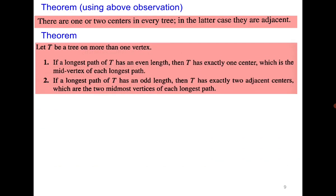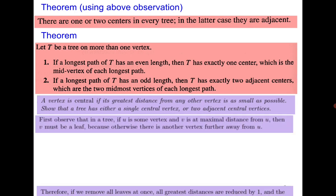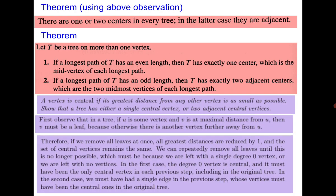Therefore we have the following observation: every tree has one or two centers. If the longest path of the tree has even length, then T has exactly one center, which is the midpoint vertex of each longest path — since an even-length path of length 6 has 7 vertices and deleting two at a time leaves one. If the longest path has odd length, then T has exactly two adjacent centers.